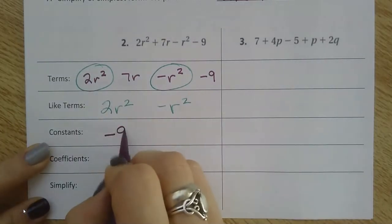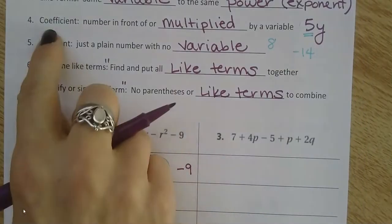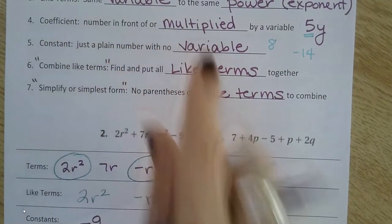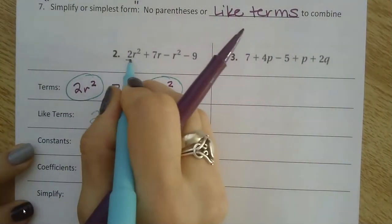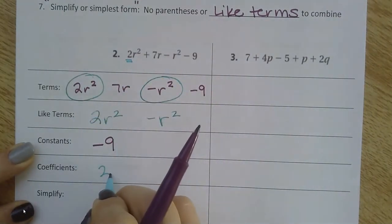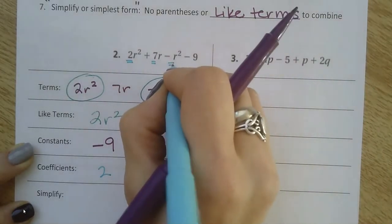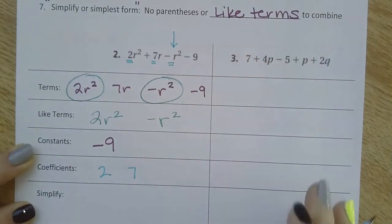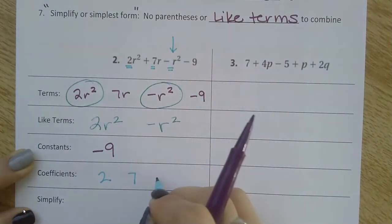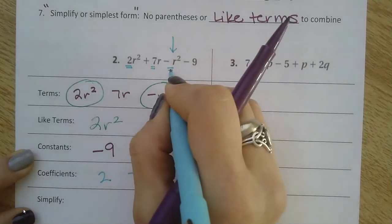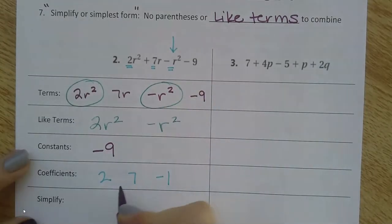Constants - plain number by itself - just the negative 9 is a constant. Coefficients - the number in front of or multiplied by the variable. The coefficients here are: I have a 2 multiplied by the r squared, I have a 7 multiplied by the r, and I actually have a number here - there's an invisible number, a negative 1 in front of this r squared. No coefficient on the plain number. So I've got 3 coefficients there.